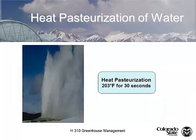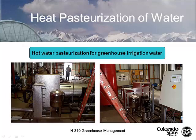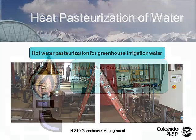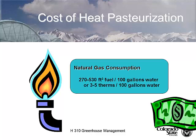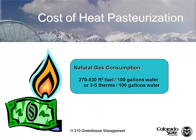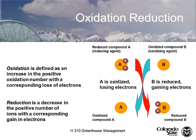In Europe, many growers use heat pasteurization — heating water to 203°F for 30 seconds kills most organisms. This is attached to a steam boiler. However, it requires 270 to 530 cubic feet of natural gas per 100 gallons of water, or three to five therms, so it's very expensive. A lot of people in the United States don't use heat pasteurization because of fuel costs, though it does work.